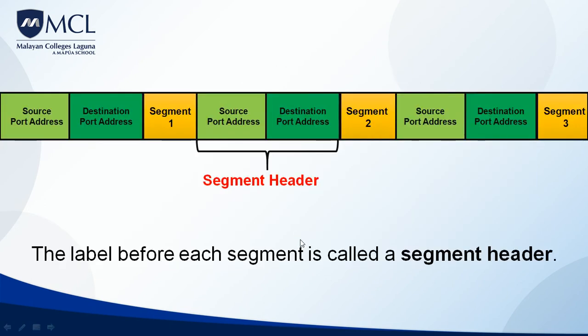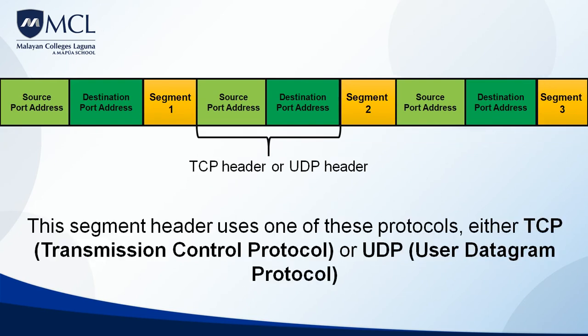The label before the segment is called the segment header. The segment header uses one of two protocols: either TCP (Transmission Control Protocol), in which case it's called a TCP header, or UDP (User Datagram Protocol), in which case it's called a UDP header. They cannot be used simultaneously — it's either a TCP header or a UDP header, depending on the application.